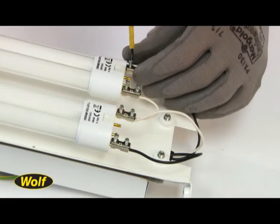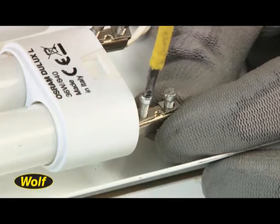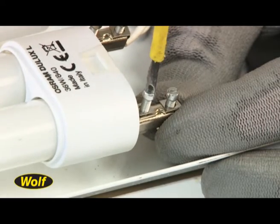Remove the screw terminal connectors from the fluorescent lamp pins. Note that the connectors are fitted on the outer pins.